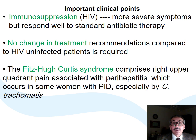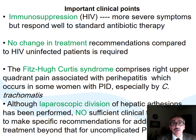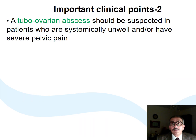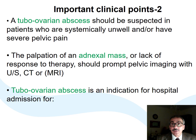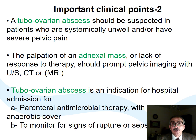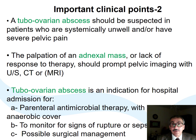If we discover the famous Fitzhugh-Curtis syndrome during diagnostic laparoscopy for any other reasons, and we do not have the resources, skills, or patient consent to perform liver adhesiolysis, there is no sufficient evidence to justify organizing another invasive procedure to do so. For suspected tubo-ovarian abscess, pelvic and abdominal imaging should be organized, and the patient should be hospitalized to start parenteral antibiotics, monitoring, and possibly invasive procedures.